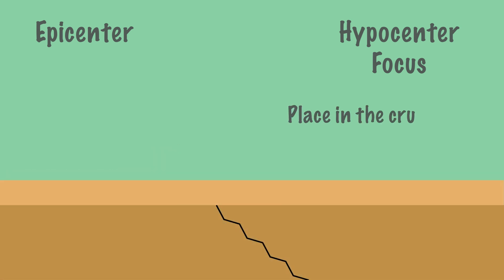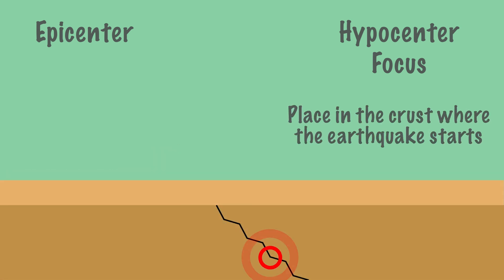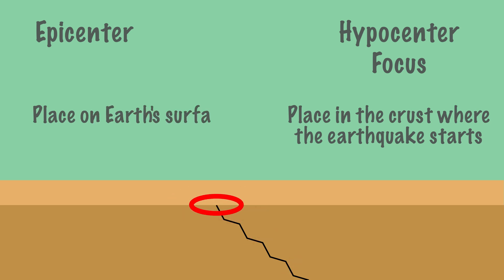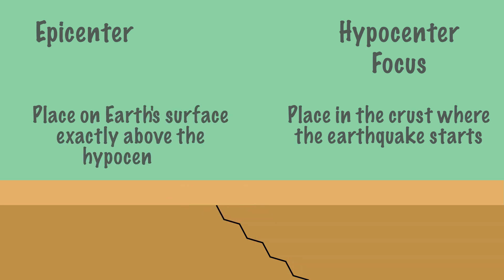In short, the hypocenter is the place in the crust where the earthquake starts, and the epicenter is the place on the earth's surface exactly above the hypocenter.